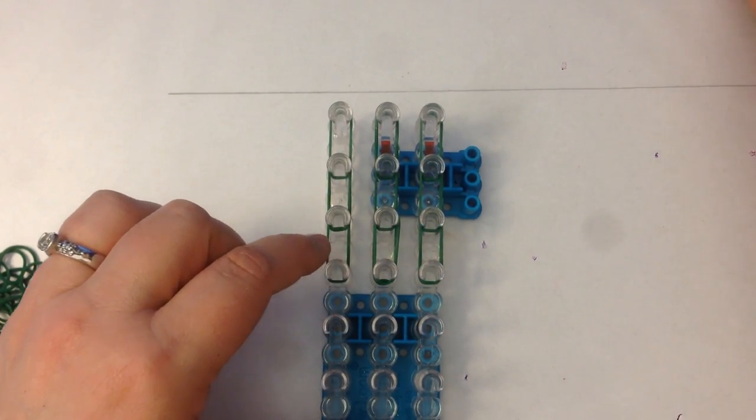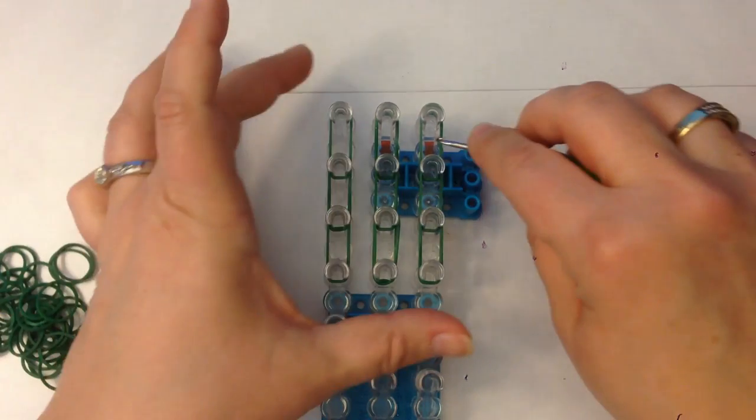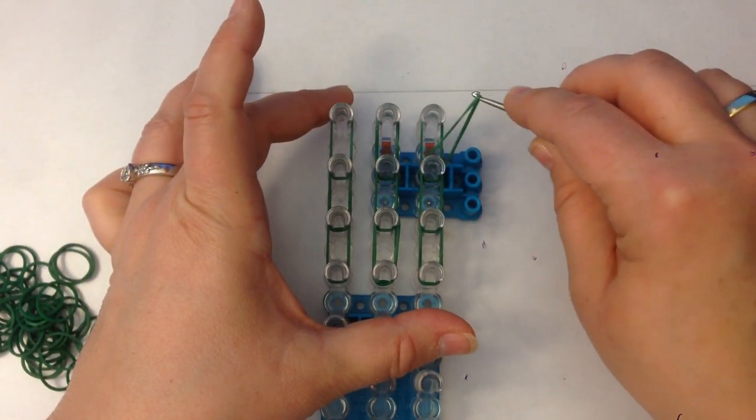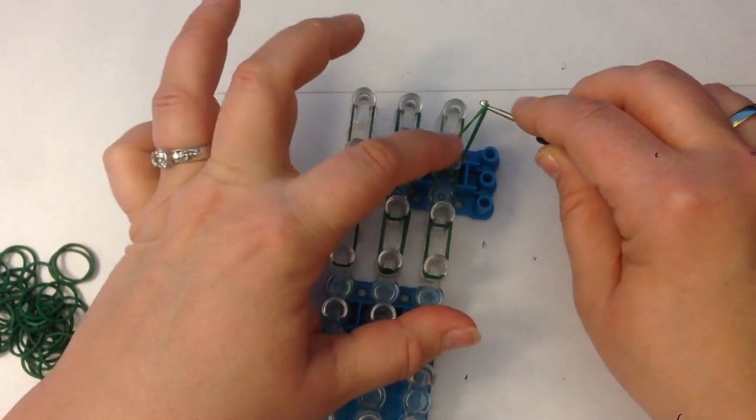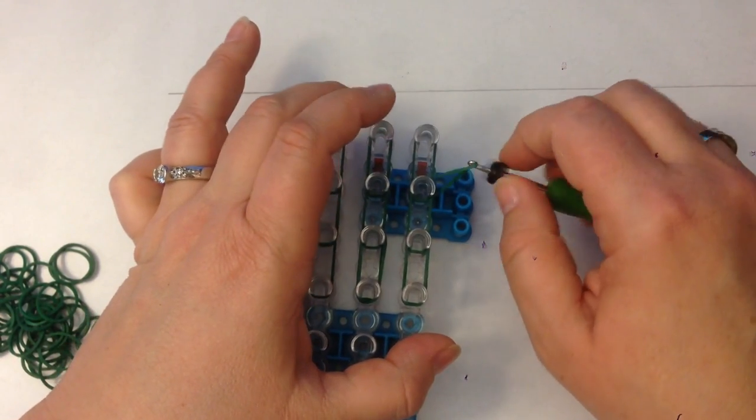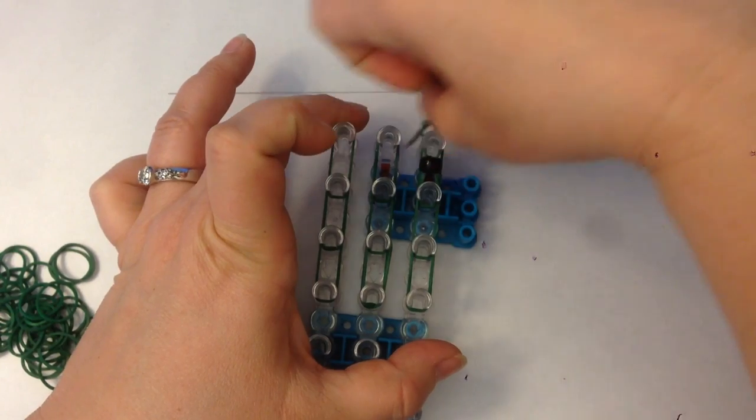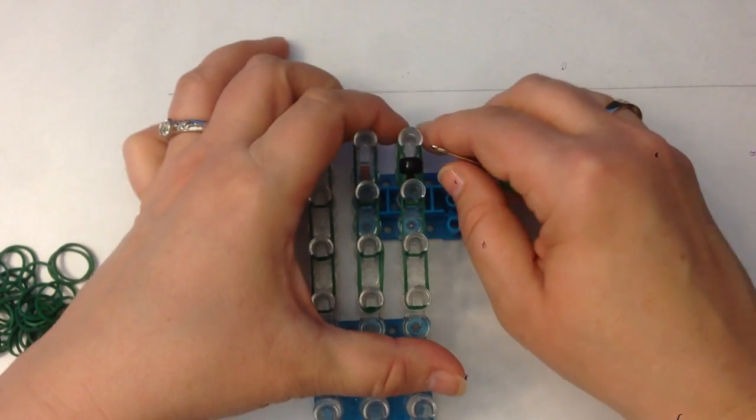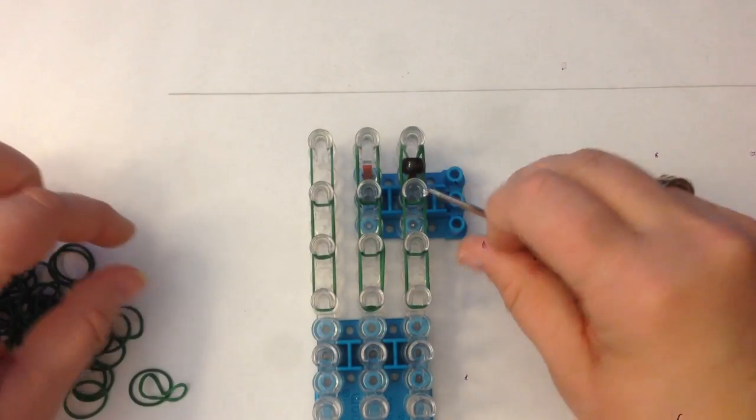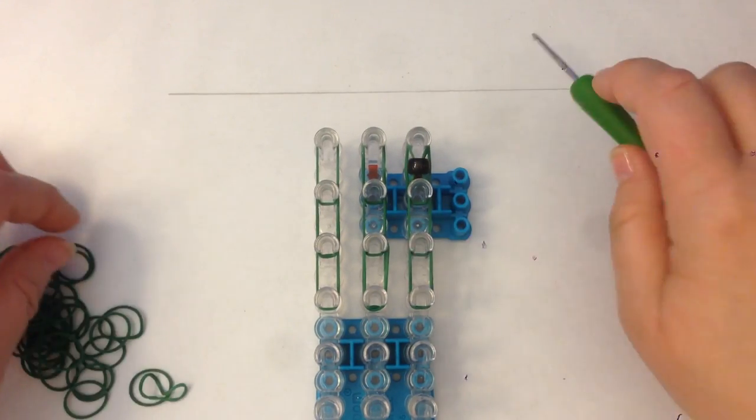So taking our pony bead, place it through your hook. Now lift one band off this side. You've got two bands there. You're going to just lift one and place the pony bead on it like so. Now we're going to put an arm here and a leg here. We'll make those at the bottom of our loom.